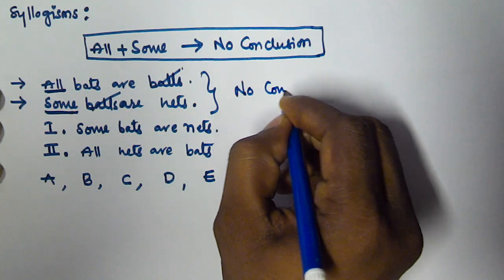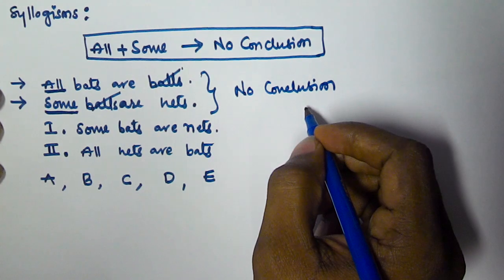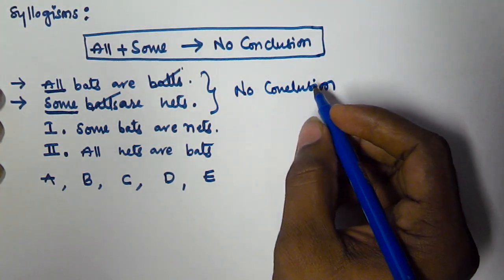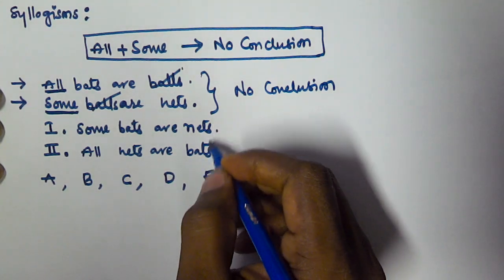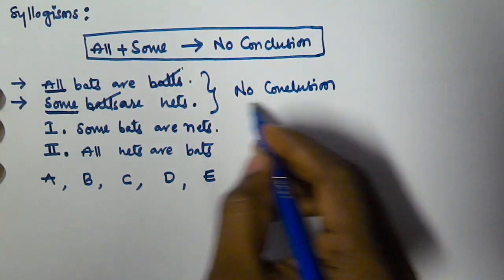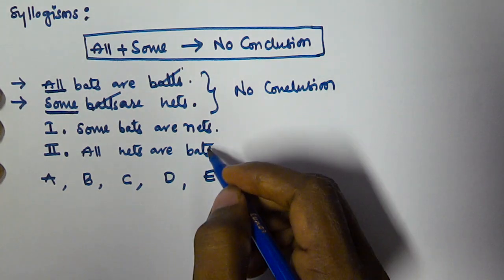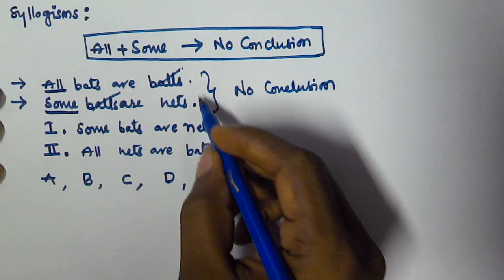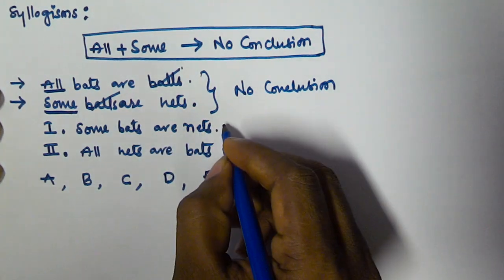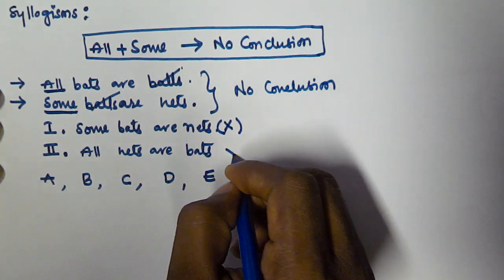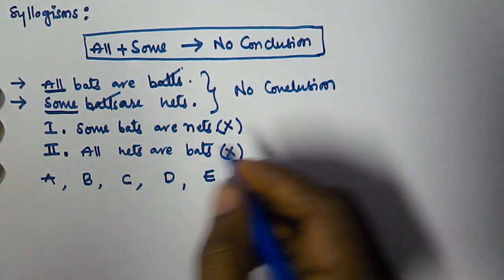Since no conclusion can be derived, we check whether the given conclusions are true or false. Because we cannot conclude anything from these statements, both the given conclusions are going to be false.